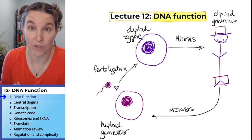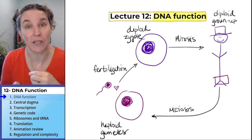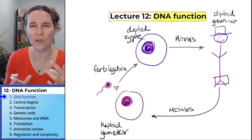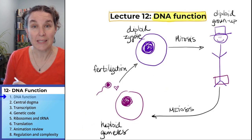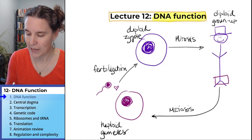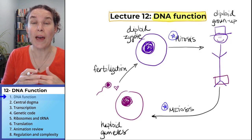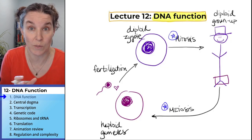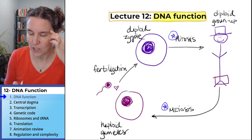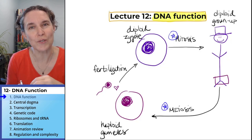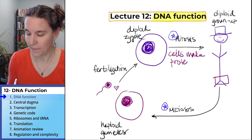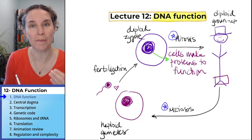DNA is so important because of its function in providing the instructions for building proteins. DNA replication happens every single time mitosis and meiosis occur — we make copies of the DNA so that when our cells divide to make more cells, each cell has a complete copy of all the DNA that you need. DNA function is about the cell producing the proteins that it needs to function, and those instructions come from the nucleus in the DNA.